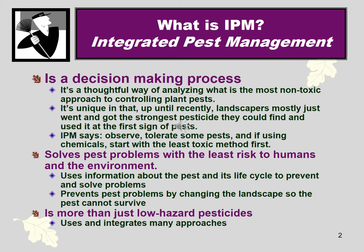IPM also creates the least risk to humans, and this saves money and time. It's harder to get your head around the cumulative impacts to humans, especially those spraying some of these pesticides. They might be able to do it for a few years, but later they might have some kind of disease problem from cumulative exposure. Not to mention end users — people using that landscape, getting micro doses, which can be bad for them too. IPM always steps back, looks at the whole problem, and tries to find the least toxic solution first.